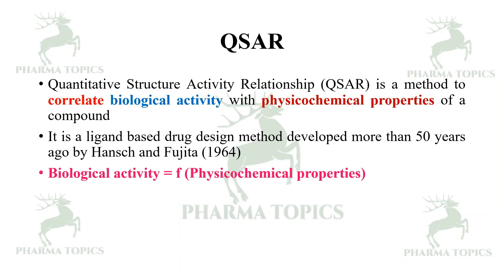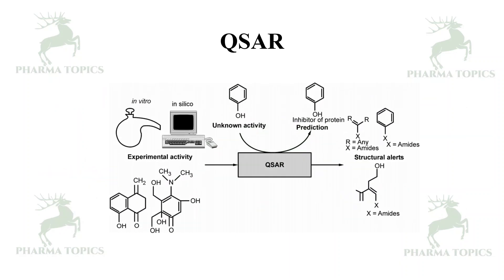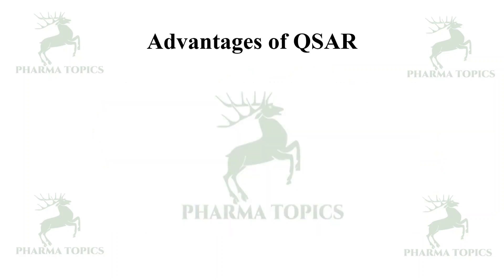The basic equation of QSAR is: biological activity = function of physicochemical properties. It finds the correlation between chemical structure and biological activity — such as IC50, EC50, Ki, Km — or categorical binary outcomes like active/inactive or toxic/non-toxic. In practice, you provide in vitro data, perform in silico work on a set of compounds, and predict activity. Changing functional groups and quantifying the effect on activity is the essence of QSAR.